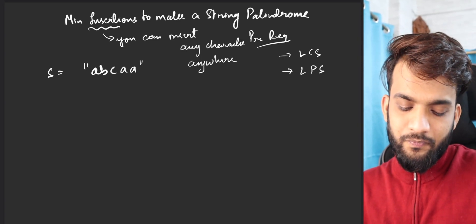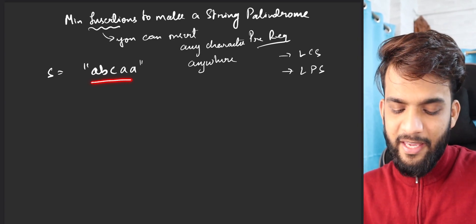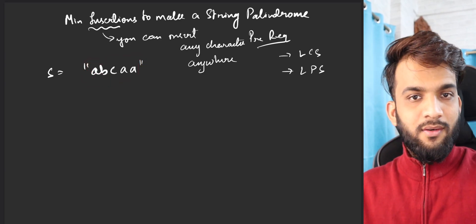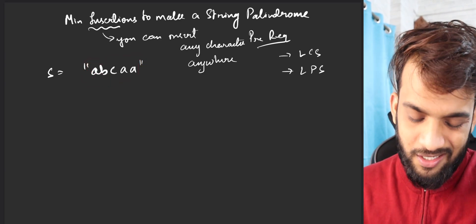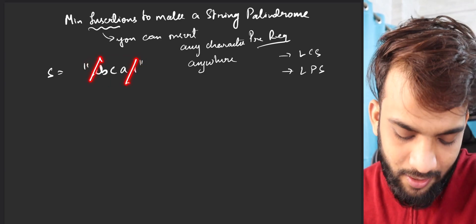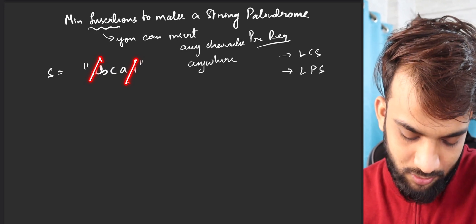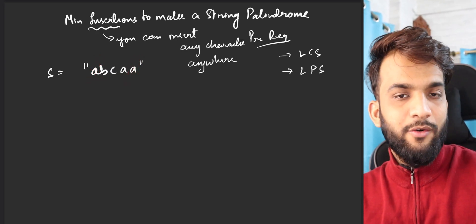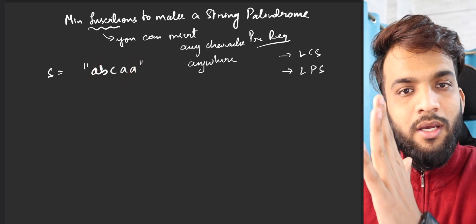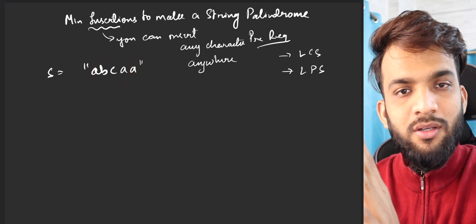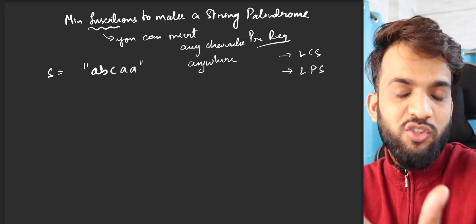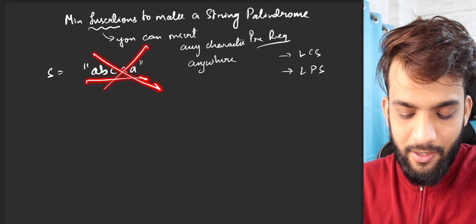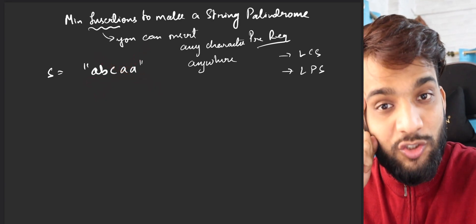For example, if you have A, B, C, double A — is this a palindrome? A and A are matching, but it's not a palindrome. A palindrome reads the same when you reverse it, and this string is not palindromic.